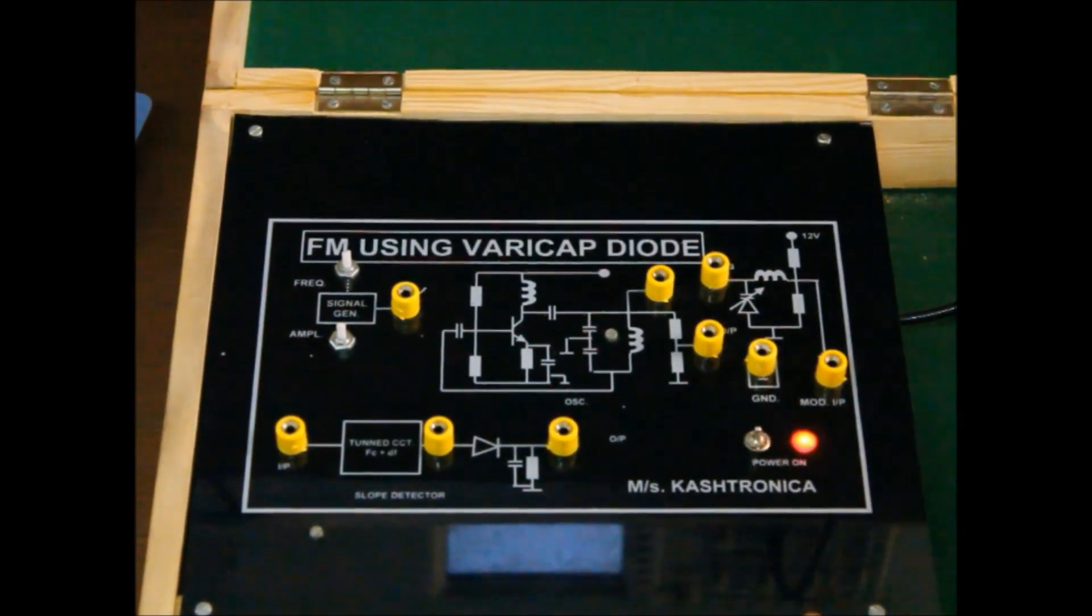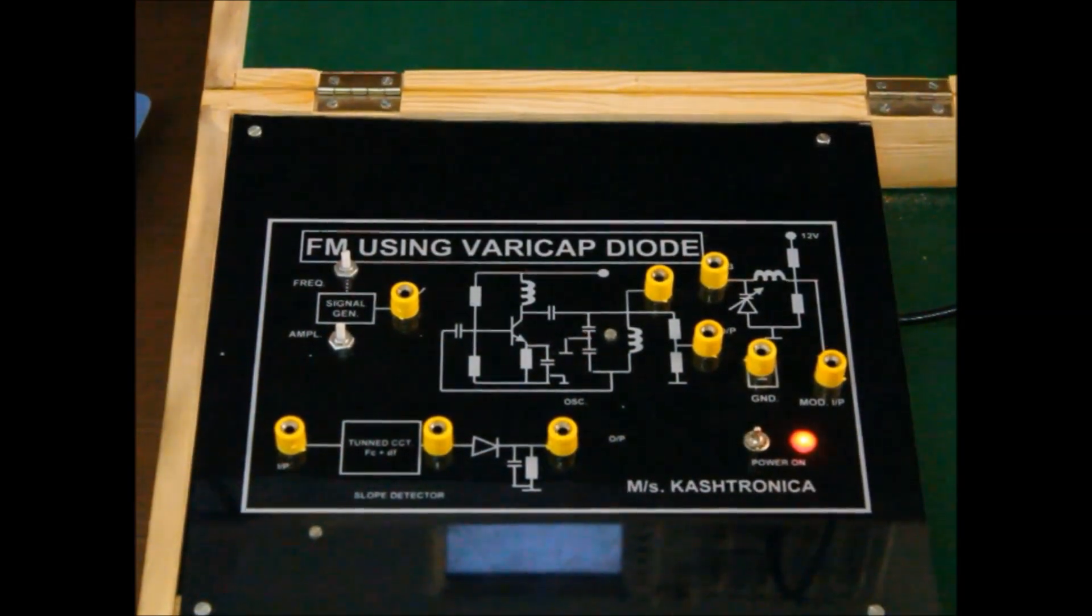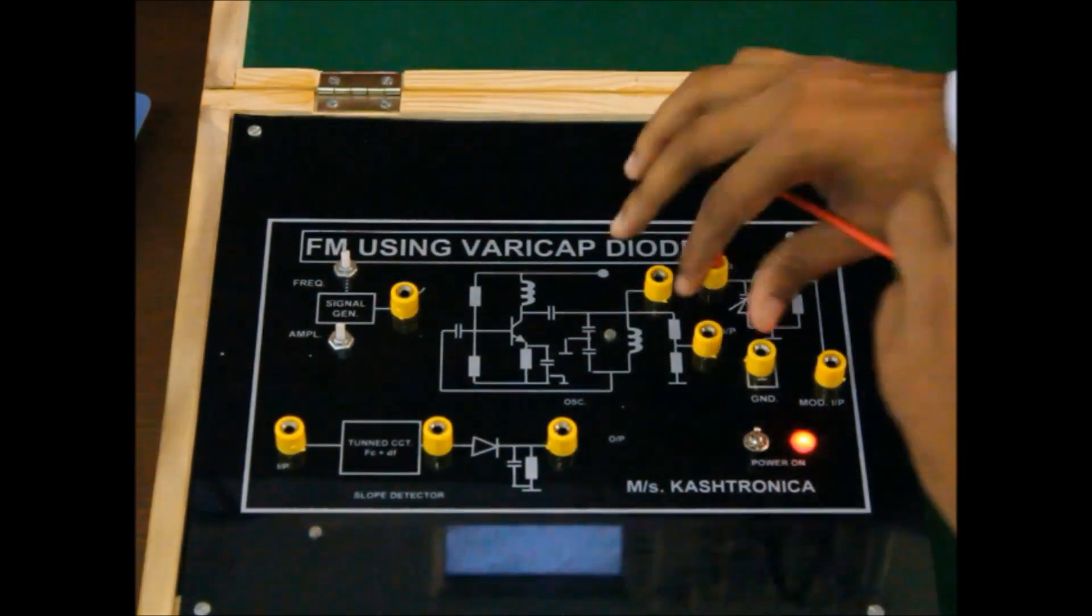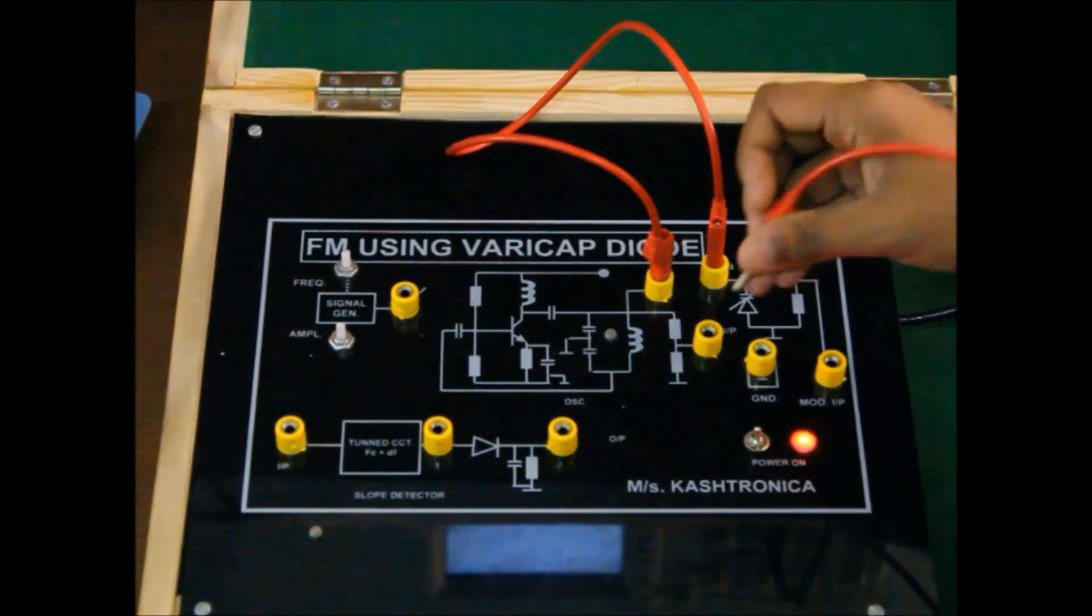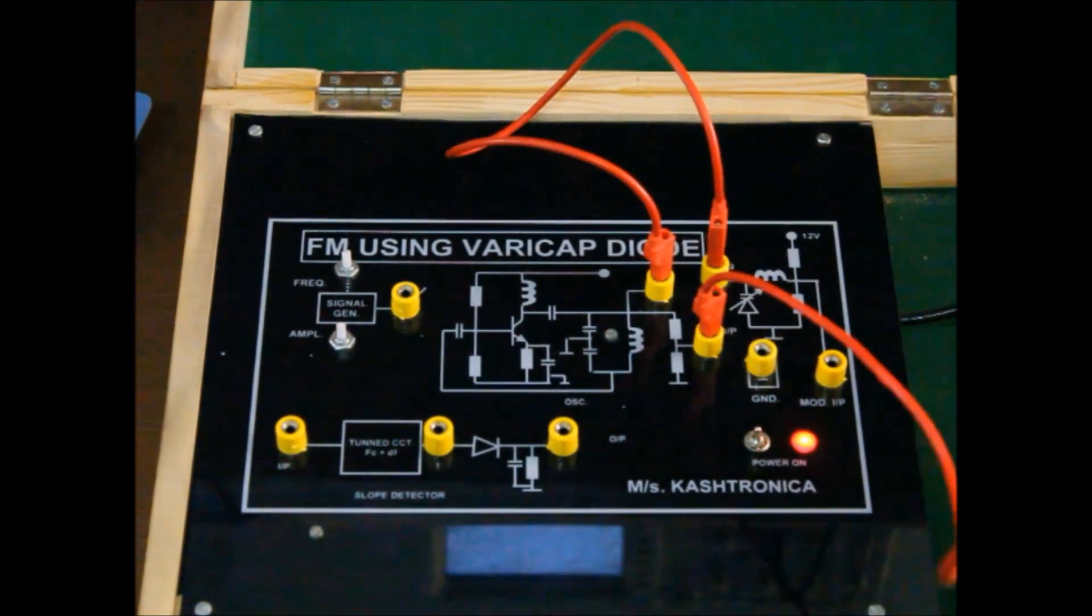Switch on the power supply, short your LC oscillator output and the Varicap Diode modulator and measure the FM output on the DSO.